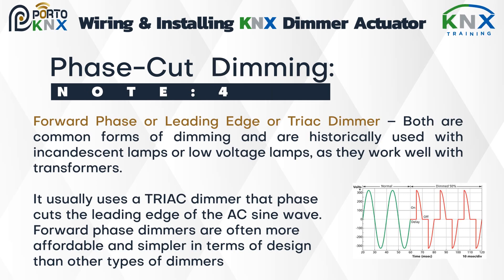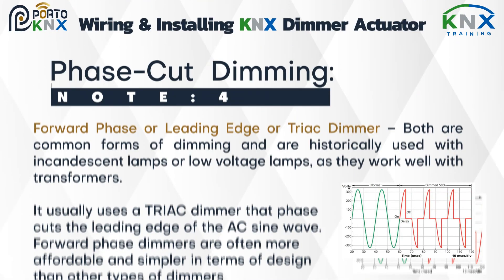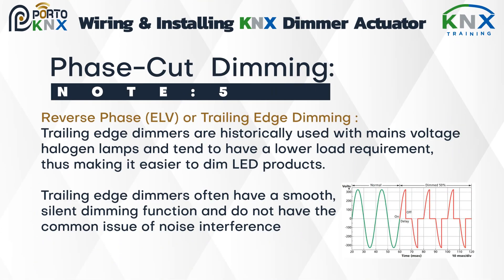The first type is phase-cut dimming — forward phase, also called leading edge or TRIAC dimming. These are common forms of dimming historically used with incandescent lamps. A TRIAC dimmer cuts the leading edge of the AC sine wave. Forward phase dimmers are often more affordable and simpler in design than other types of dimmers.